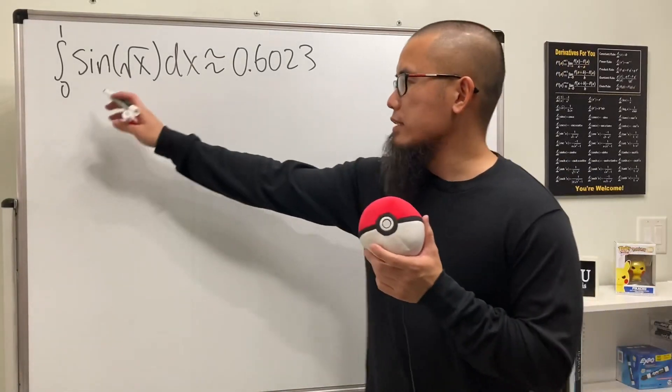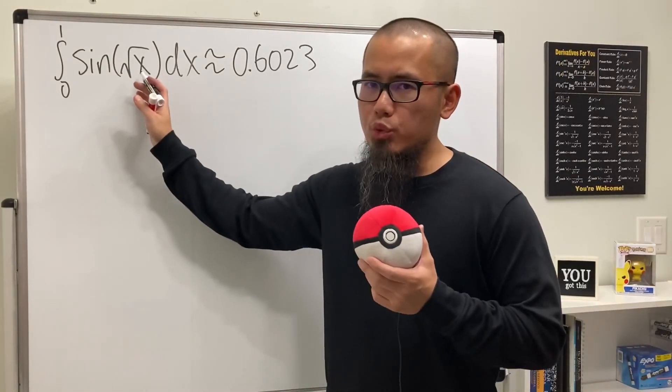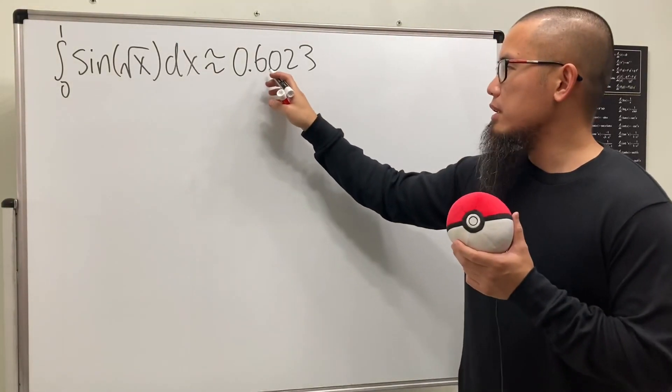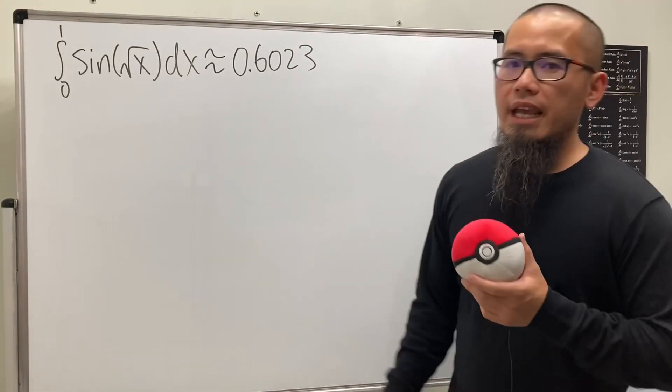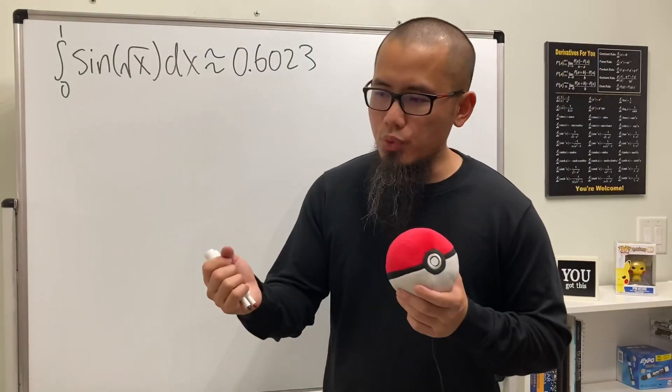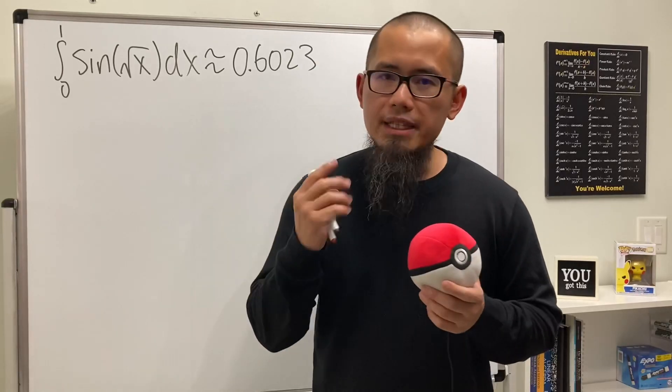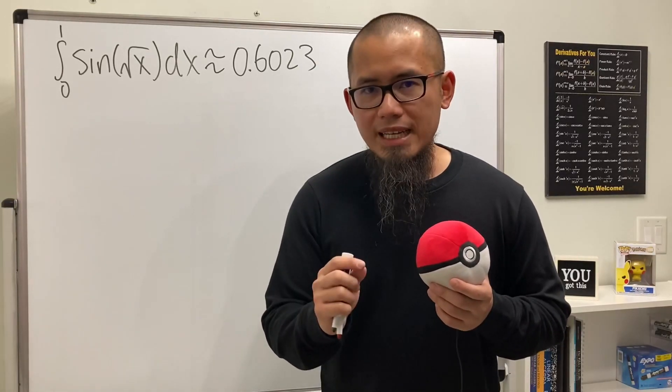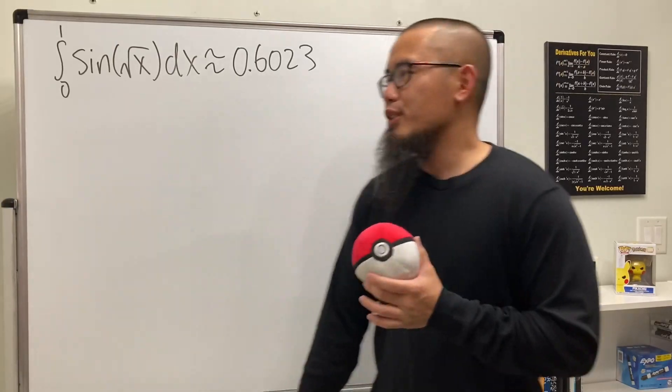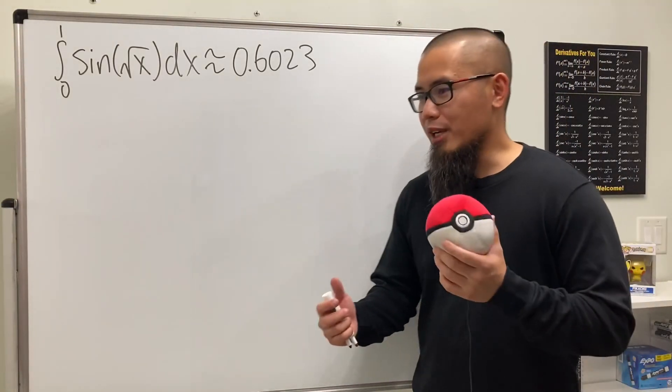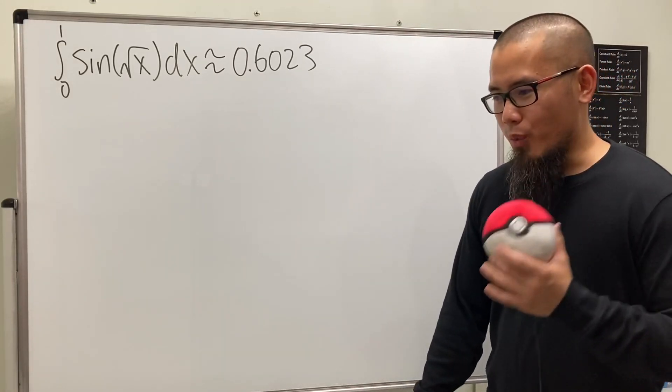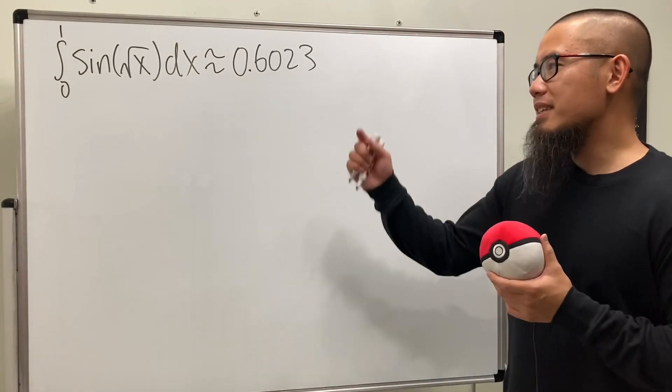Here we have the integral going from 0 to 1 of sine of square root of x. If we use a calculator, we'll get about 0.6023. This is a very interesting integral because when we use the midpoint rule and the Simpson's rule, when n equals 4, we will see that the midpoint rule is actually better than Simpson's rule. Let's do the computation first so we can see the midpoint rule is actually better, and then we'll talk about why.